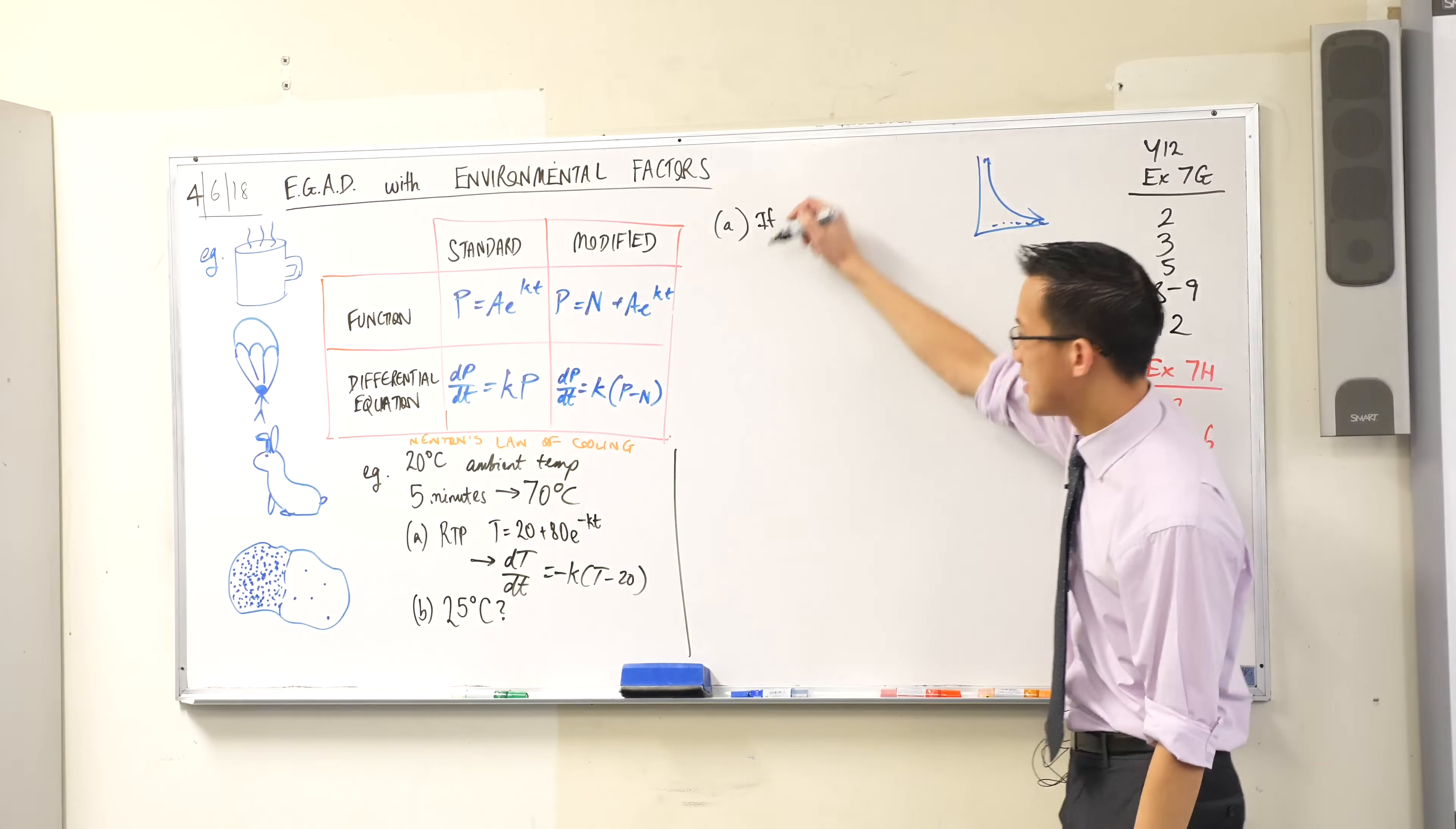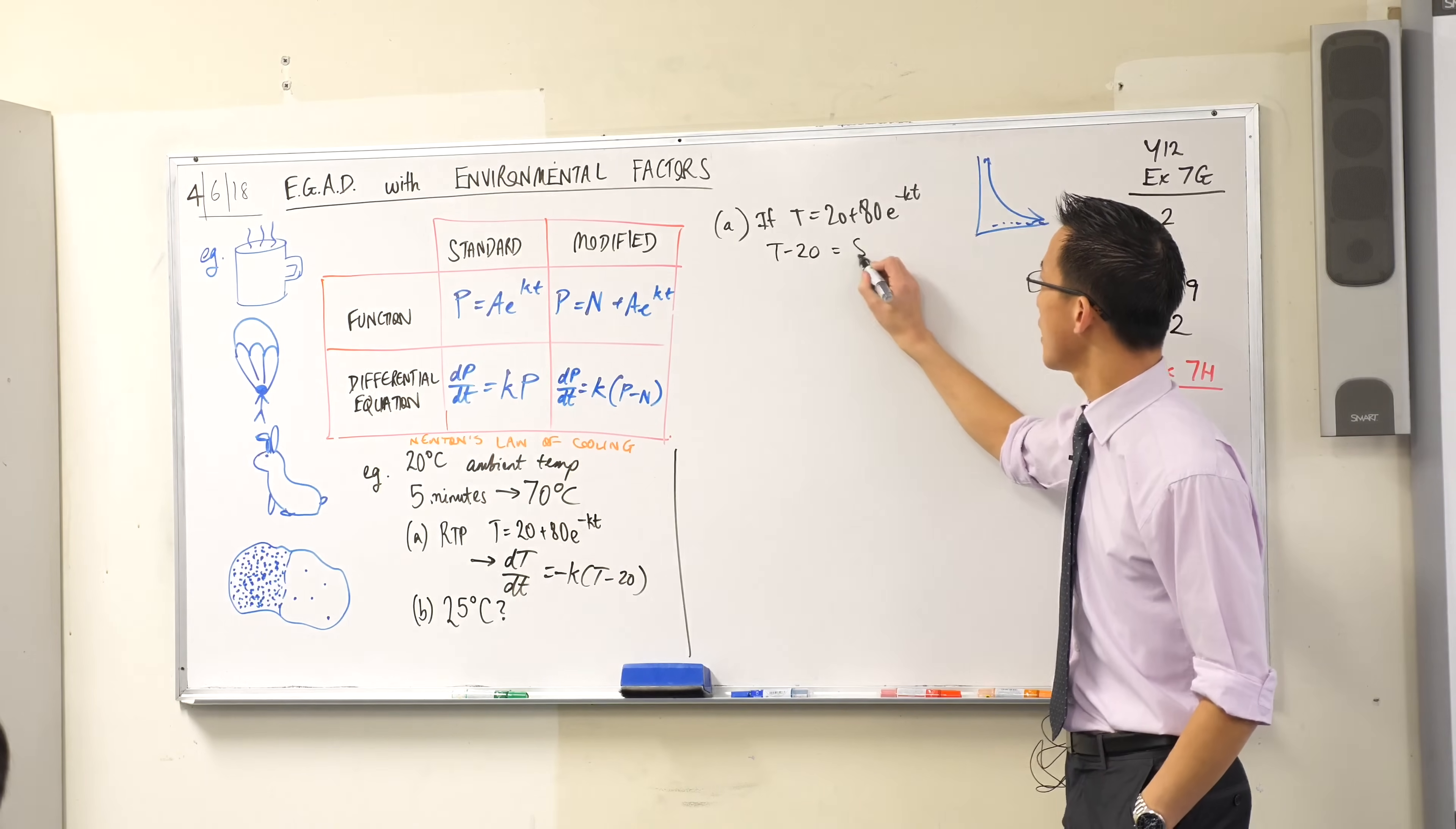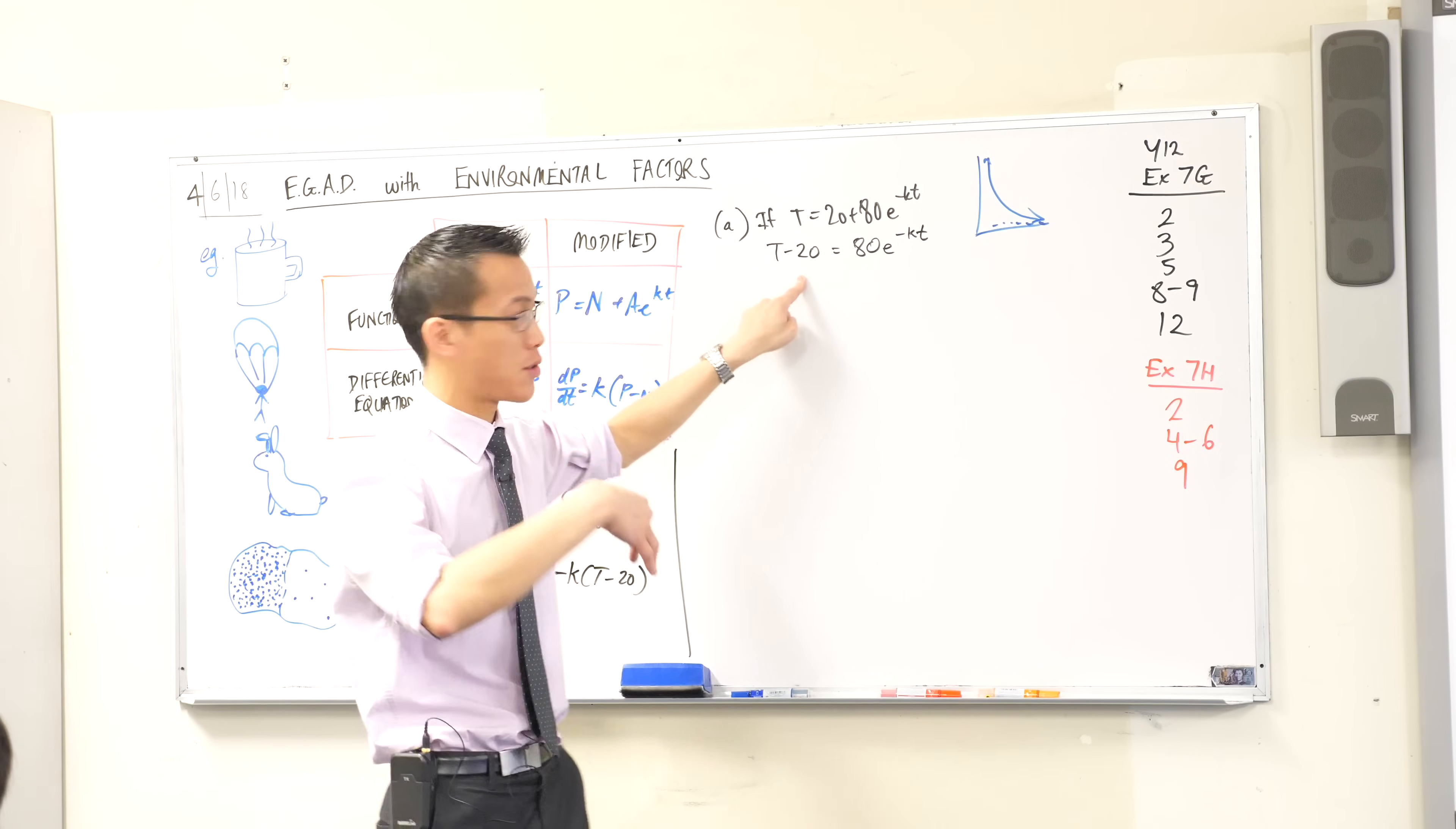So I'm going to say if t really was this, if t was 20 plus 80e to the minus kt. Let's take Arian's suggestion here, there's no reason why it doesn't work. If I subtract 20 from both sides, t minus 20, I end up with this. Now we might as well do it with this. If I differentiate the left hand side as it is right now, what happens to that negative 20? It becomes nothing. You can disregard it.